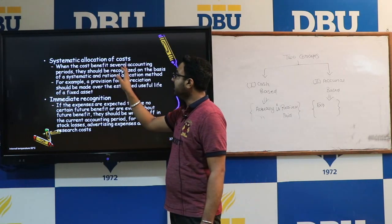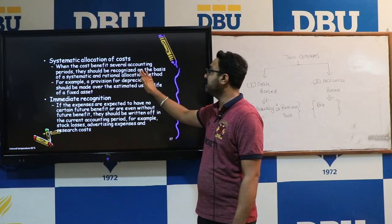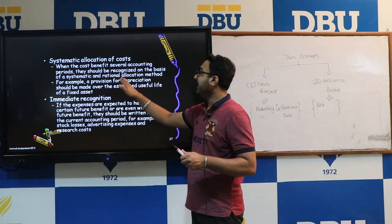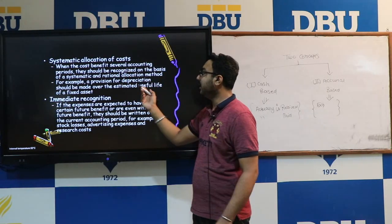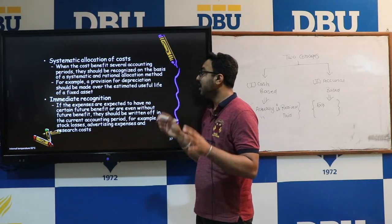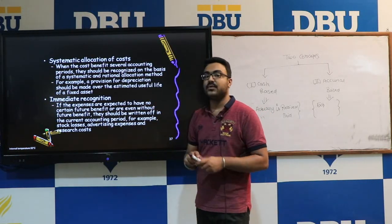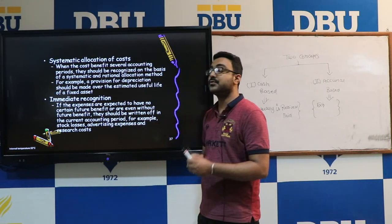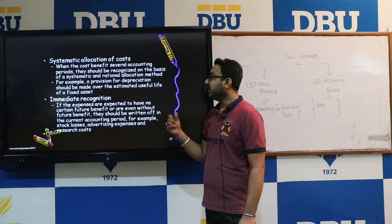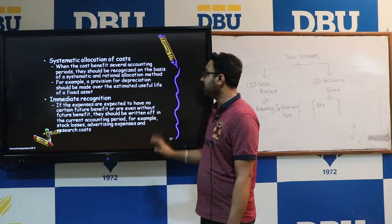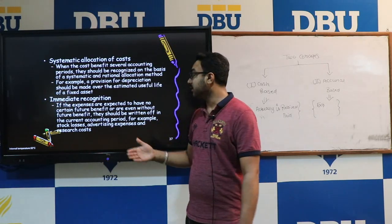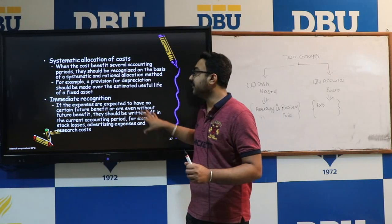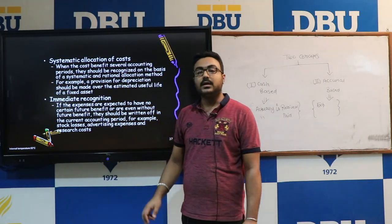Next is systematic allocation of cost. When the cost benefits several accounting periods, it should be recognized on the basis of a systematic and rational allocation method — for example, a provision for depreciation made over the estimated useful life of a fixed asset. Immediate recognition means if expenses are expected to have no certain or future benefit, they should be written off in the current accounting period, for example, stock losses, advertisement expenses, and research costs.